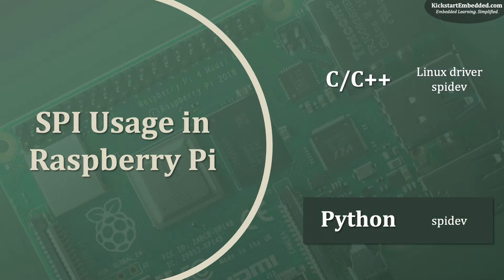If using Python, then using SPIdev is the best option. In fact, a lot of freely available Python modules use C or C++ based implementations in the background to efficiently use the SPIdev framework. The learning curve for such a method is pretty low, and heavy abstraction allows you to talk to your SPI slave within a few lines of code.